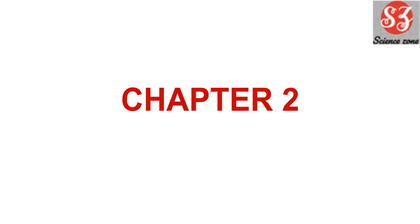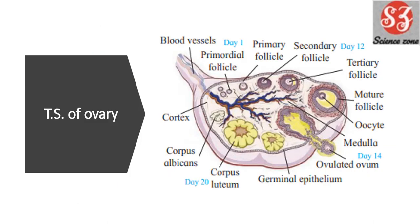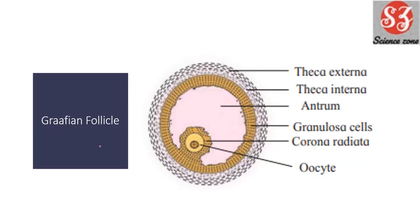Next is Chapter 2. The first important diagram is LS of testes and TS of testes. You should do the LS and TS of testes, as well as TS of ovary, because these questions can come in long answer as well as in draw neat labelled diagram format.